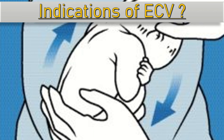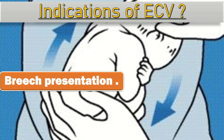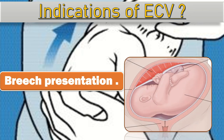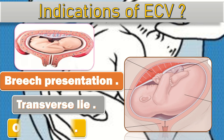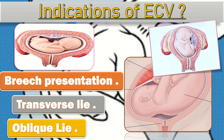First of all, every patient with a breech presentation at 36 weeks in primigravida and 37 weeks in multipara, having no other contraindication to vaginal delivery, is offered external kephalic version. Also, patients with transverse lie or oblique lie are also candidates for external kephalic version.